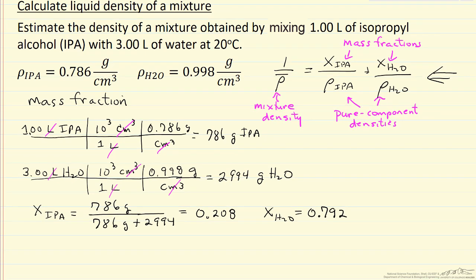So what I'm going to do is 1 over the density of the mixture equals mass fraction of isopropyl alcohol over density 0.786 grams per cubic centimeter, and then the same for mass fraction of water over density 0.998 grams per cubic centimeter. And I do the calculation.